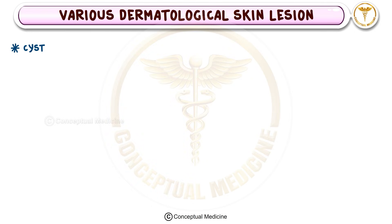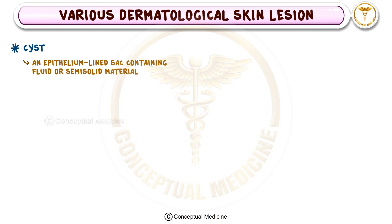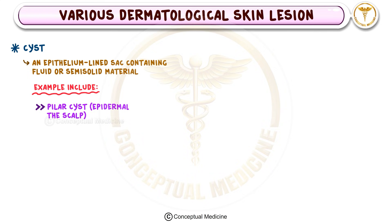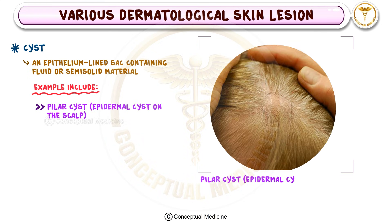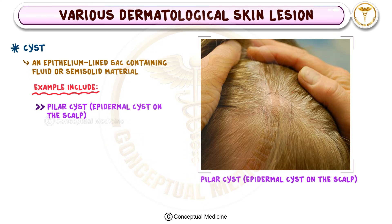Another important lesion is the cyst. A cyst is an epithelium-lined sac that contains fluid or semi-solid material. A classic example is a pilar cyst, commonly found on the scalp, which feels like a firm, mobile nodule under the skin.